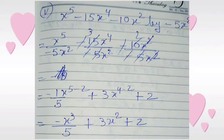We divide minus 10x squared by minus 5x squared. The x squared terms cancel and minus minus cancels, giving the answer 2. This concept has already been discussed.